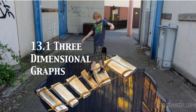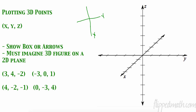Welcome back — 13.1, three-dimensional graphs. We're going to be talking about a couple of different types of graphing systems. The three-dimensional graph is a lot like ones you already know: the x and y coordinate plane. Now we're going to add a third dimension — the z-axis. When you write points, it's always going to be x, y, z — alphabetical order, so it should be easy to remember.